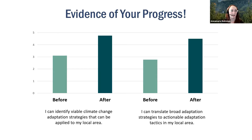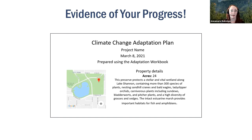That's a big jump in progress. The other question is whether you can translate broad adaptation strategies to actionable adaptation tactics in your local area, and again we see a big increase. Now that you've all developed your climate change adaptation plan, you can download and use it to reference in the future, such as informing a management plan. It also provides you some of the science and research for climate change impacts and how that translates into your decisions behind actionable adaptation tactics.